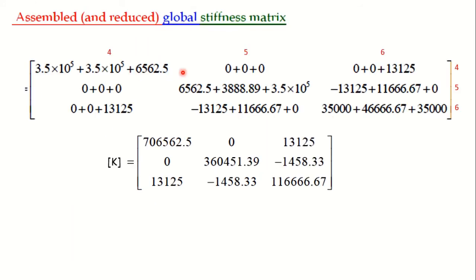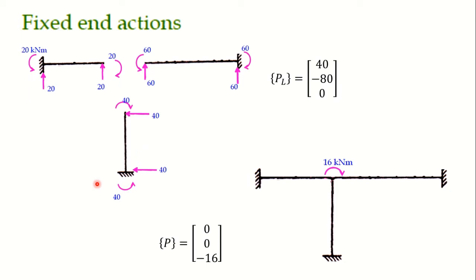We now assemble the global stiffness matrix using the three coordinates 4, 5, 6. All three members are connected at these coordinates, so each contributes stiffness coefficients. We add contributions from members 1, 2, and 3 at each coordinate position — K₄₄, K₄₅, K₄₆ and so on — to form the complete global stiffness matrix. Then we apply boundary conditions and determine the fixed end reactions.